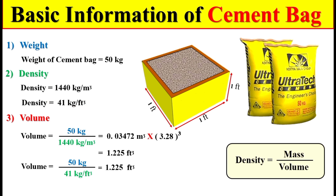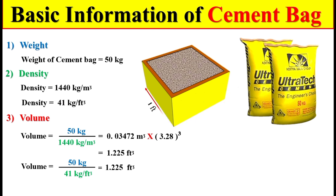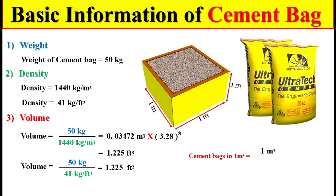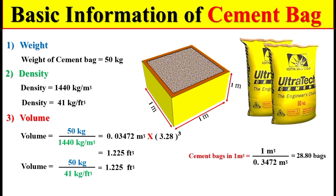For your information, to find the total number of cement bags in one cubic meter: take the total volume of one cubic meter and divide it by the total volume of one cement bag in cubic meters. This gives you the total number of cement bags used in one cubic meter.